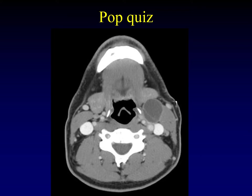Pop quiz: what's this cystic lesion in the neck? It's thin-walled, almost entirely cystic with a little septation, anteromedial to the sternocleidomastoid muscle, at the level of the hyoid bone — this has to be a second branchial cleft cyst. But the key is that this is a 44-year-old man. When you see something that looks like a branchial cleft cyst in an adult, don't fall for it — this is HPV-associated squamous cell carcinoma from the oropharynx, which can produce entirely cystic nodes.